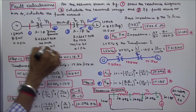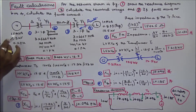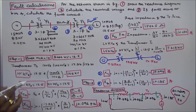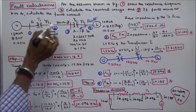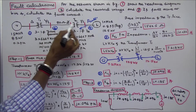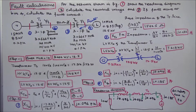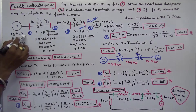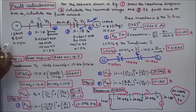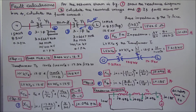This is the given network. This network consists of one generator, two transformers, one transmission line, and one load. Generator rating is 15 MVA, 8.5 kV, and sub-transient reactance is 0.2 per unit.